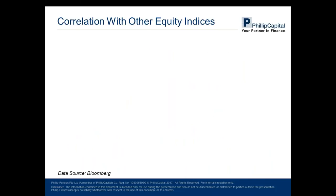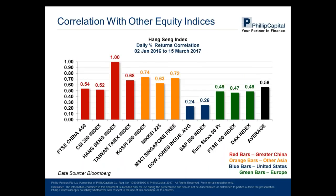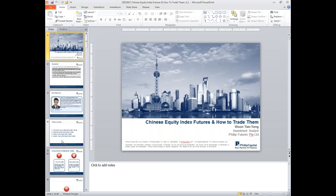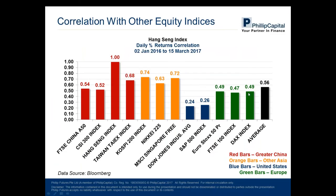Compared to the A50, the Hang Seng Index correlation is higher across the board, meaning the Hang Seng Index is more related to global equities compared to the A50. While the A50 is a very isolated index, the Hang Seng is a more global index — a gateway to the world. Movements in the US space, like the S&P and Dow Jones, can move the Hang Seng. Recently, when markets in the US became doubtful about President Trump's ability to deliver campaign promises, we saw the S&P 500 and Dow Jones correct, and the next morning the Hang Seng also dropped.